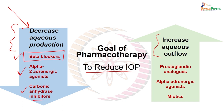So there are three classes of drugs for reduction in aqueous humor production: beta blockers, alpha-2 adrenergic agonists, and carbonic anhydrase inhibitors.